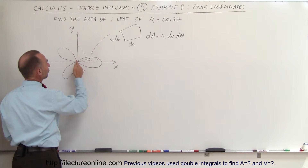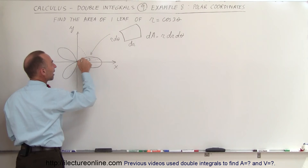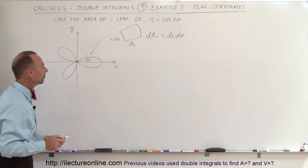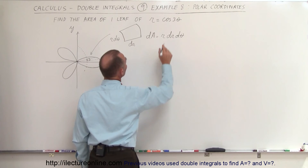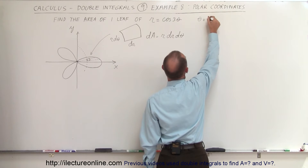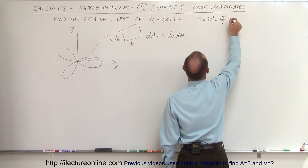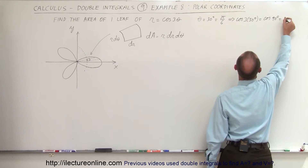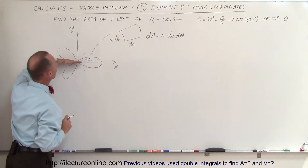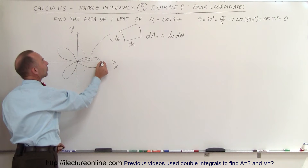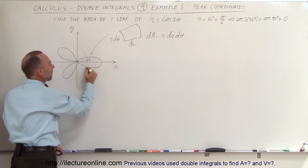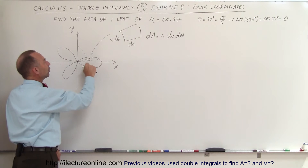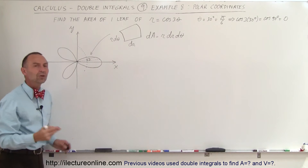We're going to integrate twice: first from zero to the edge of the leaf defined by radius R, then over the angular width. If theta equals 30 degrees, which is pi over 6, then cosine of 3 times 30 degrees equals cosine of 90 degrees, which equals 0. So moving from 0 to 30 degrees, R goes from 1 all the way down to 0. That means we integrate from minus pi over 6 to plus pi over 6, but I prefer to multiply by 2 and only go from 0 to pi over 6, integrating a half leaf and doubling it to simplify the limits.